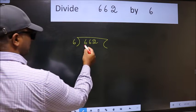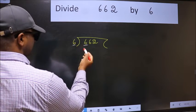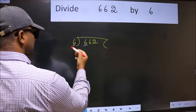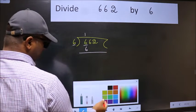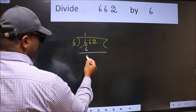Here we have 6 and here 6. When do we get 6 in 6 table? 6 once 6. Now we should subtract. We get 0.